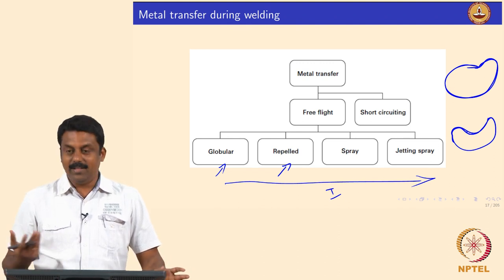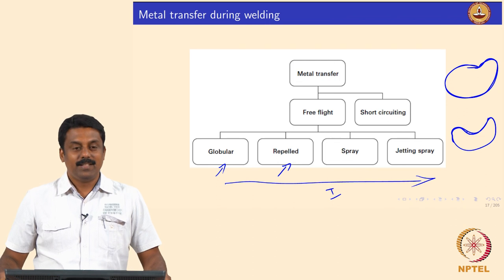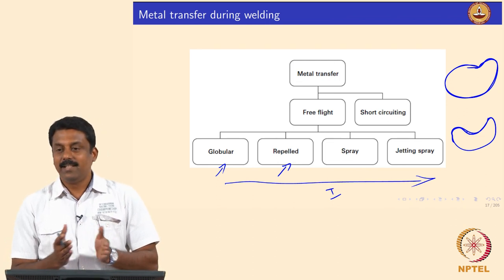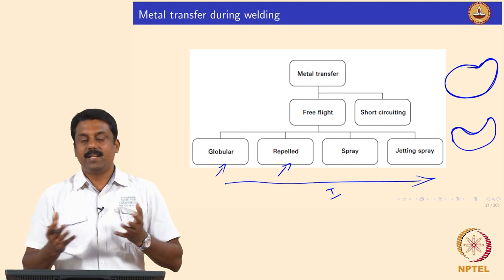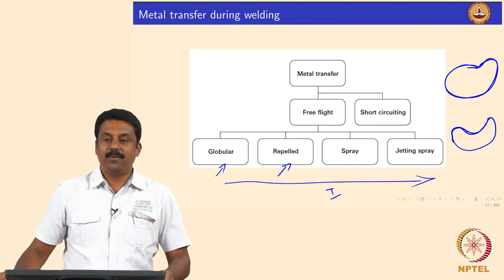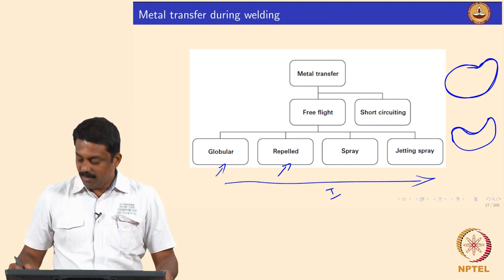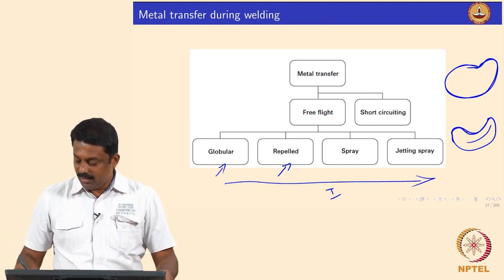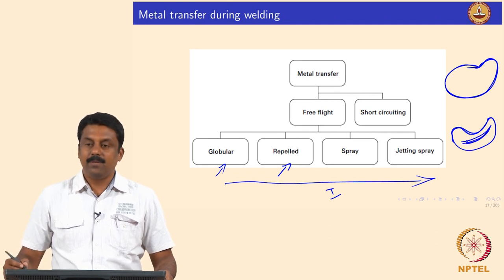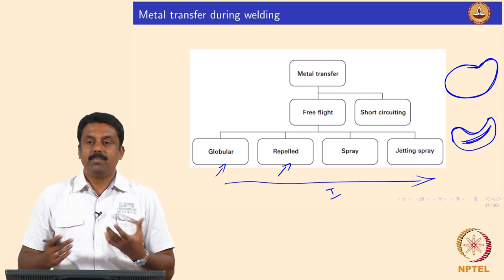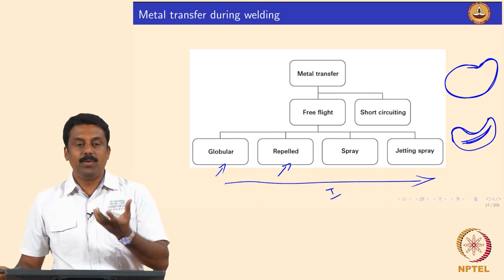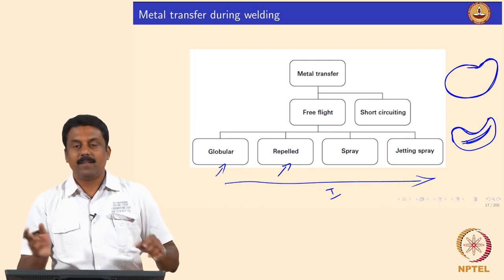That is the shape of the droplet — so when the current is increased slightly but it is not sufficient to reach the critical Lorentz force for droplet transfer, you also generate locally a slightly increased magnetic force that would change the shape of the droplet from globular to a repelled globular.